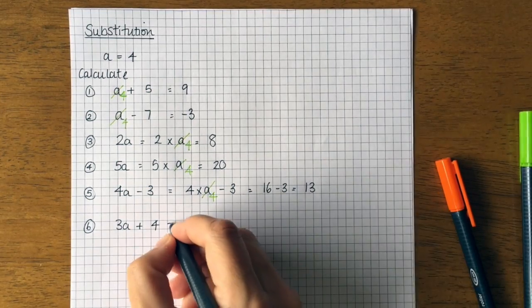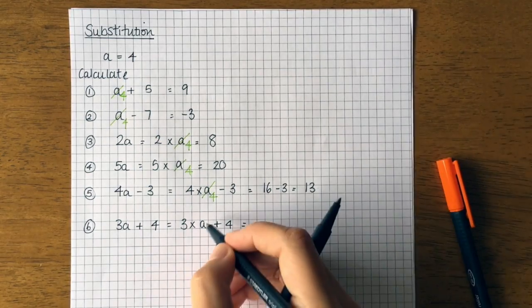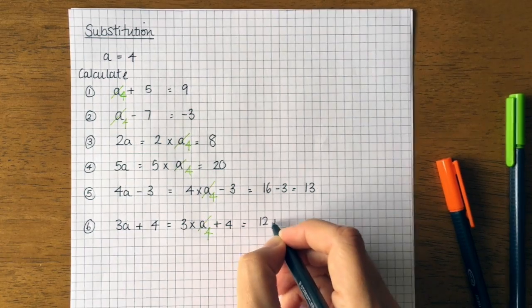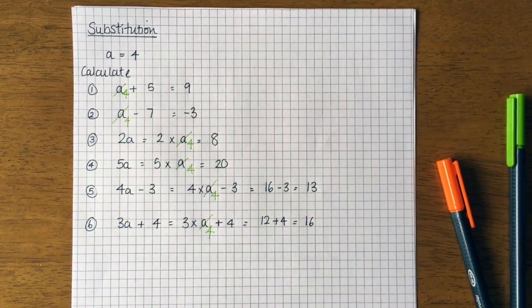And the last one, so I'm gonna do three times a plus four. So my a is replaced with four. So three fours are twelve plus four is sixteen. So can you have a go at the questions now?